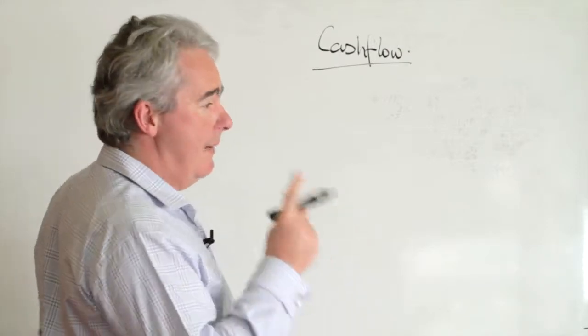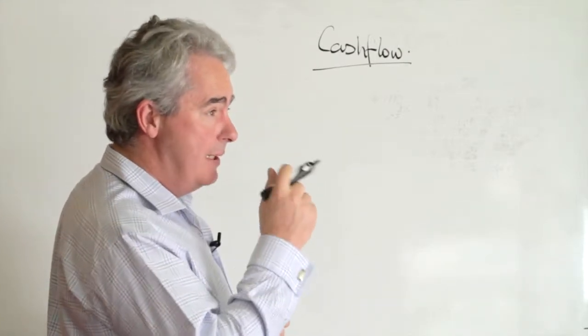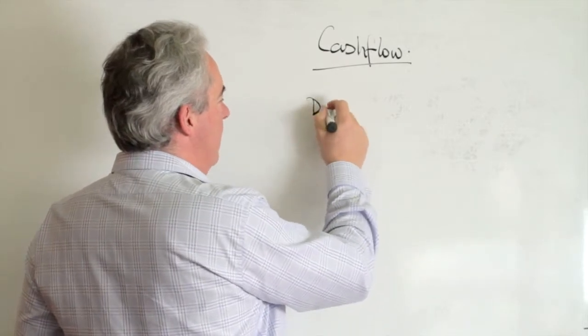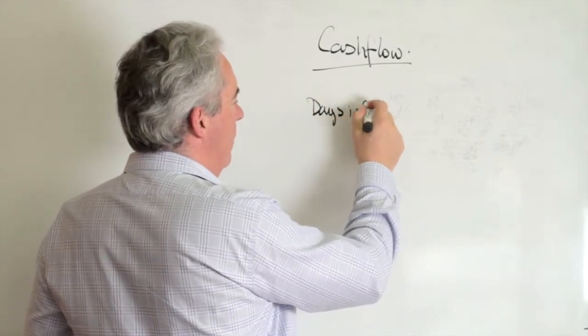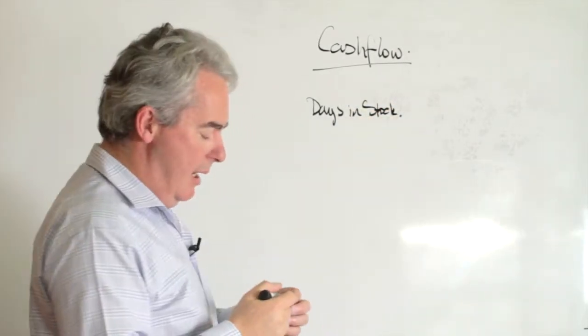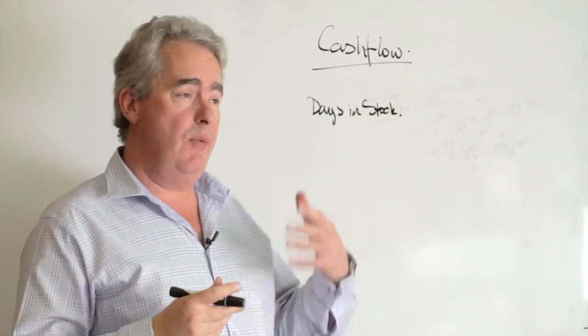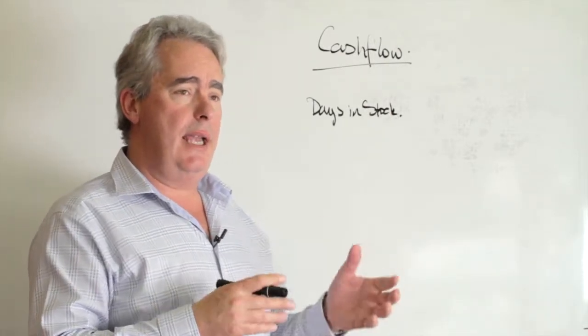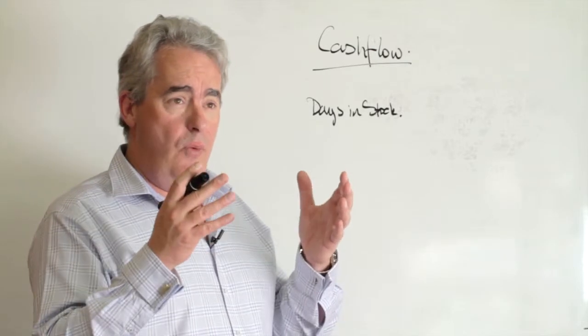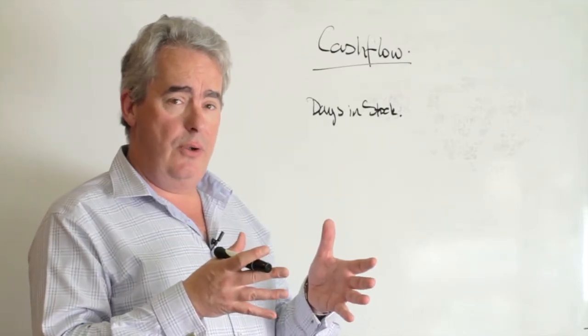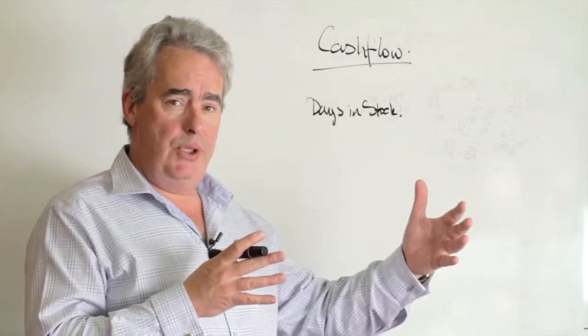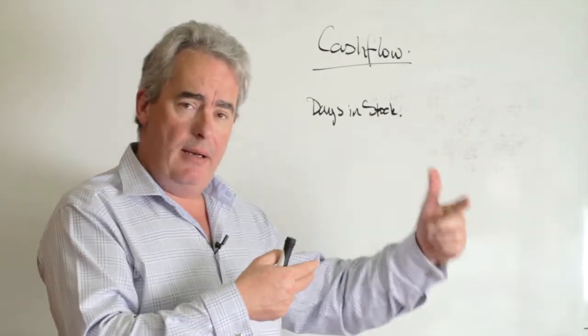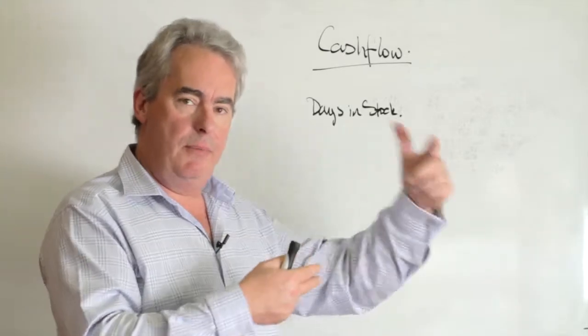So what we look at in a number of businesses is the average days in stock of inventory. Depending on the size of your inventory, let's say you've got $100,000 worth of stock and $1.2 million a year worth of sales. That basically means every 30 days or every month you're turning your stock over completely.